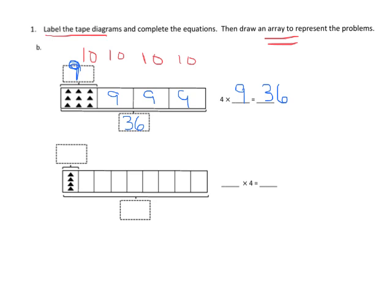For the next part, we have four triangles in each box and we can count one through nine groups of them. So we have nine groups of four, which is 36, and we put 36 right here.